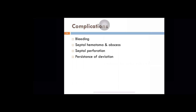Complications of septal surgery include bleeding, septal hematoma, and abscess postoperatively. Hematoma can collect between the elevated flaps where cartilage or bone has been removed, and can turn into abscess leading to absorption of the entire nasal septum and nasal deformities. If there are through-and-through flap tears with the part of the septum removed, large tears can lead to septal perforations. Improperly corrected deviations can lead to persistence of deformities.